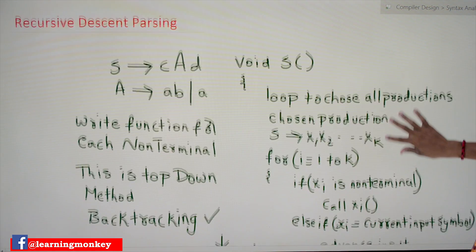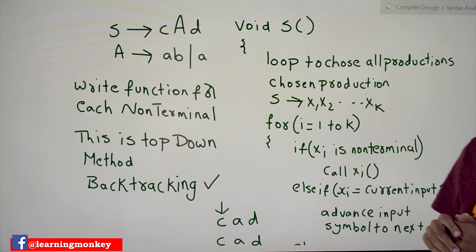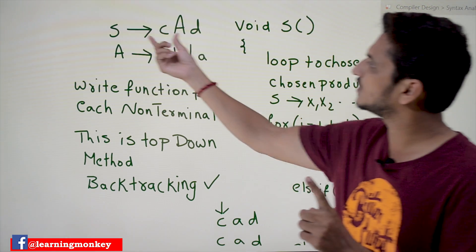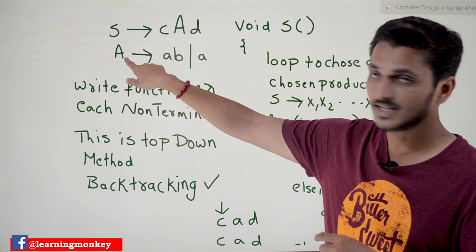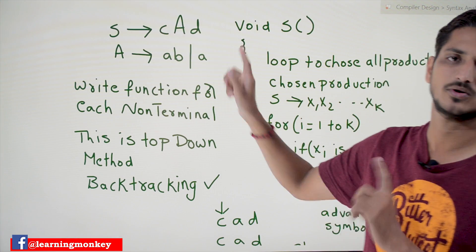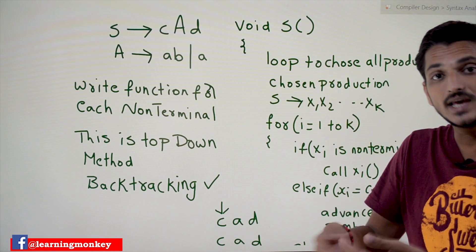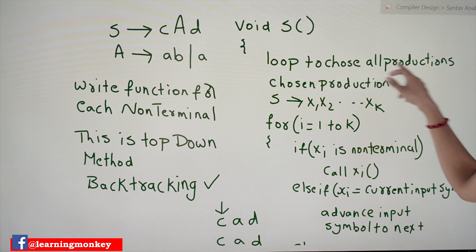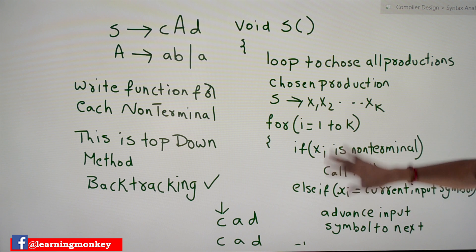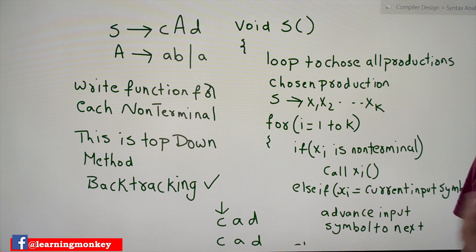S is a function because it is a non-terminal. We loop to choose all productions in S. There is one production, so the loop executes one time: S tends to c A d. In the A function, we loop to choose all productions — A has two productions: A tends to a b, and A tends to b. Take the productions one by one and execute the corresponding code.